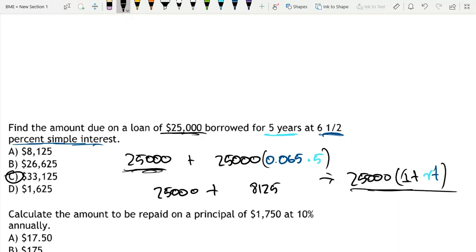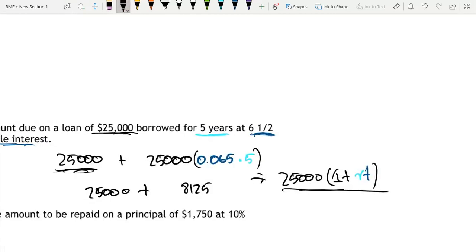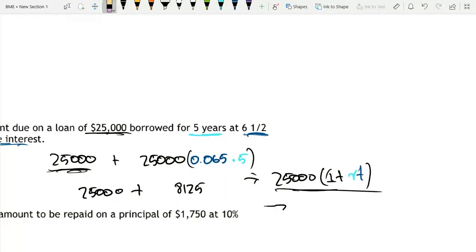This way, formulating the equation. So this would be the same thing as doing 25,000 times 1 plus 0.065 times 5. Because you're keeping this 25,000 and then this part of the equation that I'm going to put in orange. This part of the equation is the same thing as this part of this. So this would also work as well.